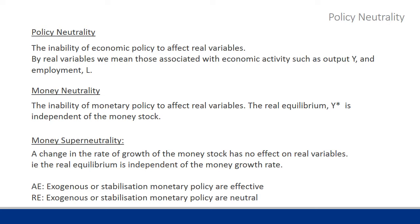Money neutrality is more specific, and it's the inability of monetary policy to have real effects, so that our equilibrium level of income is independent of the money stock — a variable we call M-bar, as you will see going forward. What is money super neutrality? It's the inability of policy to affect real variables even when there is a change in the rate of growth of the money stock, so even fast changes in the money supply have no real effect.